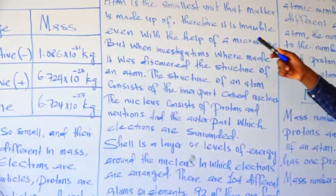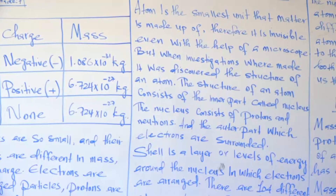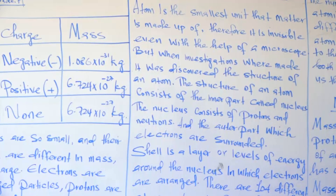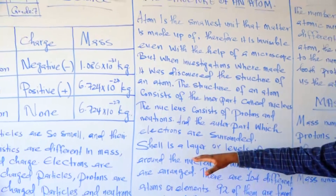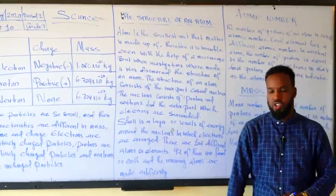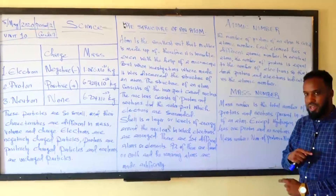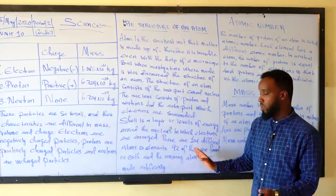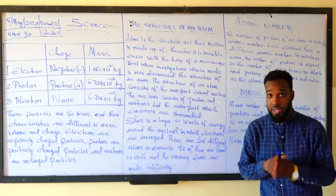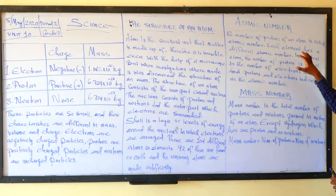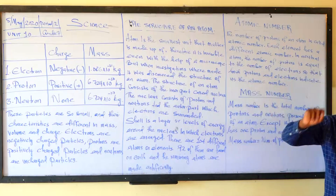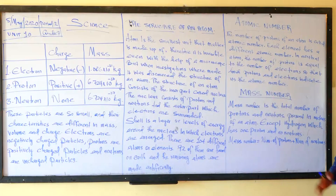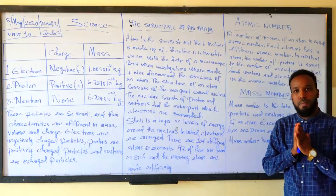The atom is the smallest unit that matter is made up of. The nucleus contains protons and neutrons. The shell is a layer or level of energy around the nucleus in which the electrons are arranged. There are 104 elements — 92 are natural and 12 are artificial. The number of protons is the atomic number. The mass number is the sum of the proton number and the neutron number.